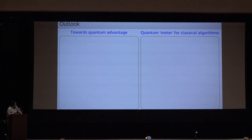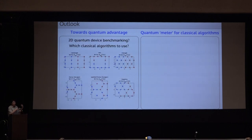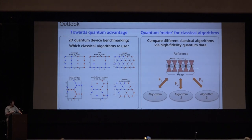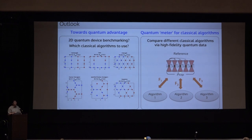We are pursuing two ongoing directions. First, we want to extend our studies to higher-dimensional quantum systems. For 2D quantum systems, we need to identify which classical algorithms to use for benchmarking. We can perform similar analysis to identify where we are in simulating large-scale quantum dynamics. Ultimately, once we reach a highly competitive regime using our quantum device, the quantum data itself can serve as a reference, and classically designed algorithms can compare their fidelity against this shared data set — a concept we call the quantum meter.